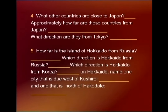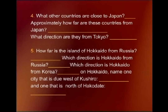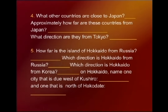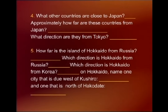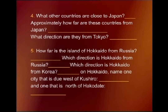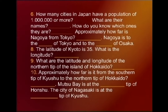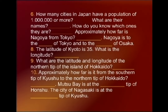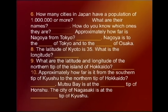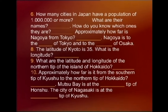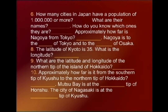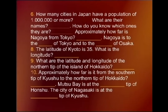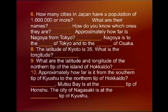On Hokkaido, name one city that is due west of Kushiro and one that is north of Hakodate — look on the map and spot these. Number six: How many cities in Japan have a population of one million or more? There are six cities: Osaka, Tokyo, Kobe, Kyoto, Nagoya, and Yokohama.